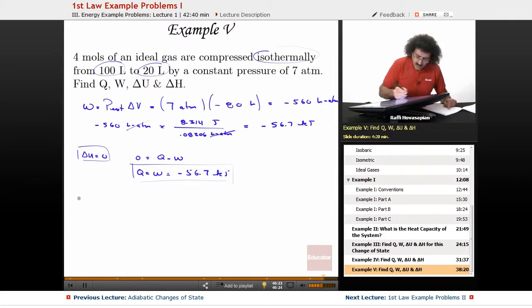And we have already worked out the delta H part. Delta H is equal to delta U plus delta PV. We are dealing with an ideal gas. This is zero, this is zero. So our delta H is zero.